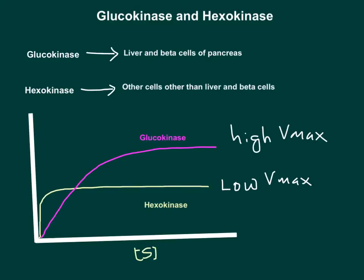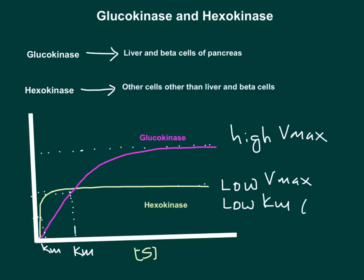Comparing Km values: for glucokinase, take the Vmax, find half of that value, interpolate down to the pink curve, and draw it down — that point is the Km for glucokinase. Do the same for hexokinase: take half of its Vmax and draw it down. Hexokinase has a low Km of 0.05 millimolar glucose, whereas glucokinase has a high Km.